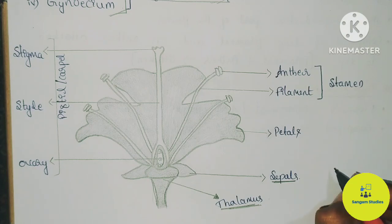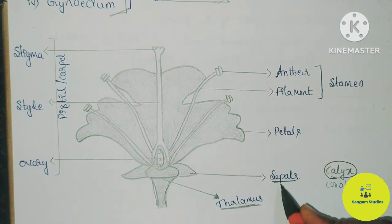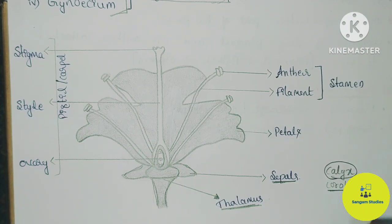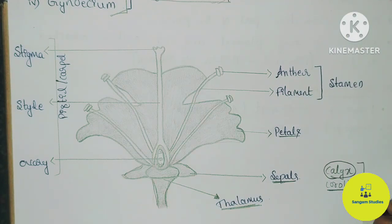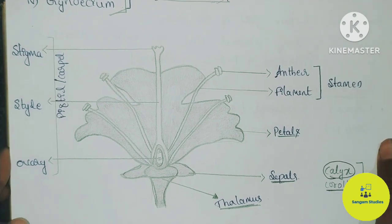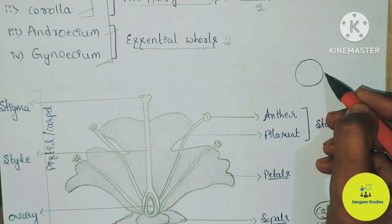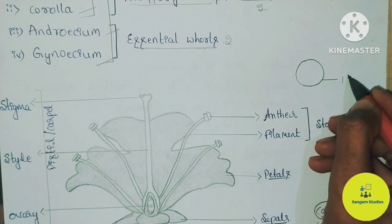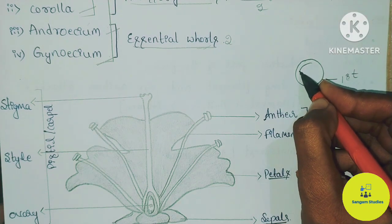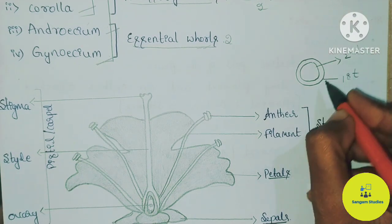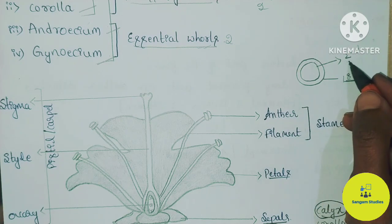The Calyx and Corolla are the two non-essential whorls. The Calyx is the individual unit — the sepals — and is the outermost whorl. The Corolla is the individual unit — the petals — and is the second whorl. The first whorl is Calyx and the second whorl is Corolla.